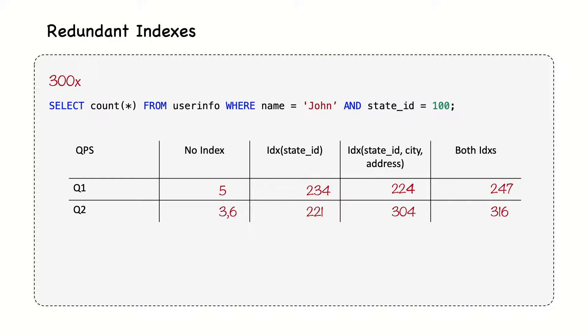After running the tests, it looks like Q1 is a bit faster using only the index on state ID column. However, query Q2 is faster using the index on all three columns. So, should we keep both indexes? If we really care about making both queries as fast as they can be, we should leave both indexes, even though the single-column index is redundant.